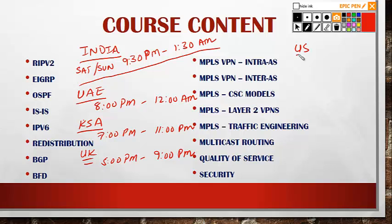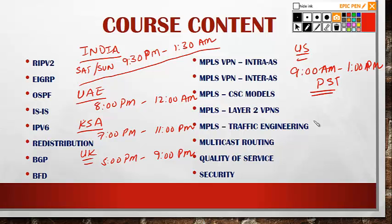In the US, it also suits the US time. I'm just going to put the Pacific time here — you guys in the US can calculate it based on that. We'll have 9 AM to 1 PM in the morning of Saturday and Sunday. This is Pacific time. This class will start on the 17th of September. It's going to go for 7 weeks or 7 weekends, which is roughly around 56 hours.